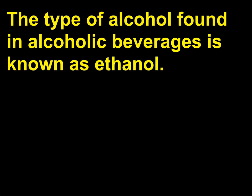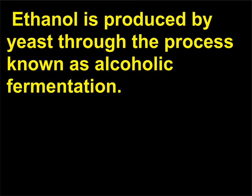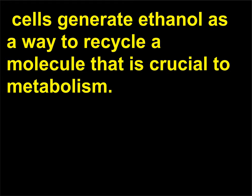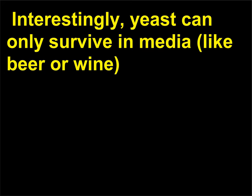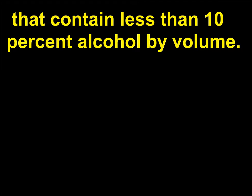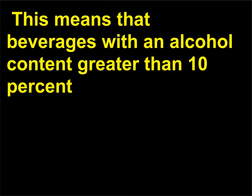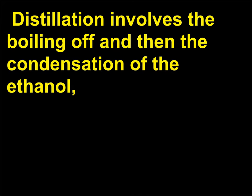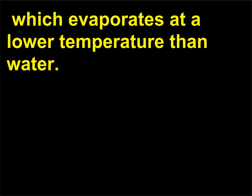The type of alcohol found in alcoholic beverages is known as ethanol. Ethanol is produced by yeast through the process known as alcoholic fermentation. During the breakdown of glucose to harvest energy, cells generate ethanol as a way to recycle a molecule that is crucial to metabolism. Interestingly, yeast can only survive in media, like beer or wine, that contain less than 10% alcohol by volume. This means that beverages with an alcohol content greater than 10% have been fortified with additional alcohol or have been distilled. Distillation involves the boiling off and then the condensation of the ethanol, which evaporates at a lower temperature than water.